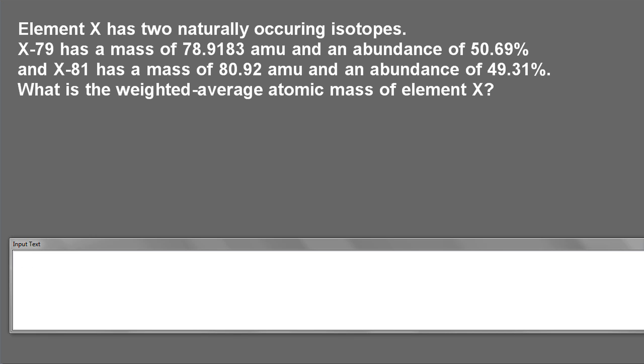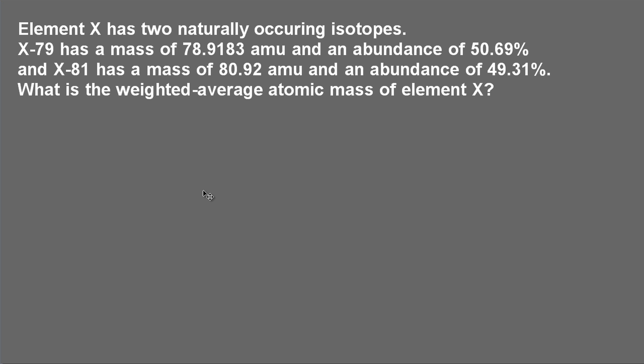So here is the problem. It says element X has two naturally occurring isotopes. We're given the atomic mass of the X-79 isotope and the atomic mass of the X-81 isotope. We're also given the percent abundance of each isotope.